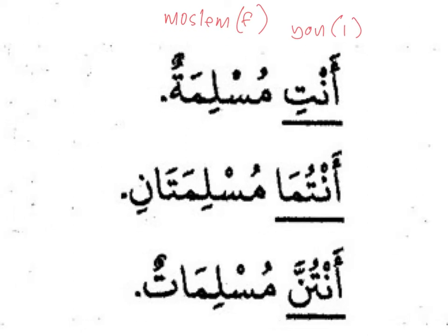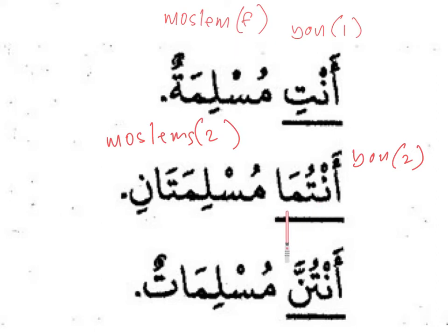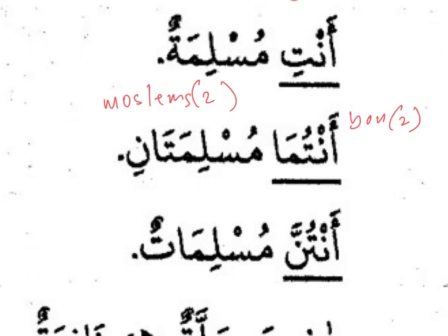The second feminine sentence is for muthanna (two): 'antuma muslimatani.' Antuma means 'both of you.' Muslimatani is the dual form of muslima — two female Muslims. You can see the ta marbuta in the original word muslima and the ta again in muslimatani. Since this is for two females, the correct Domir is antuma — 'antuma muslimatani.'